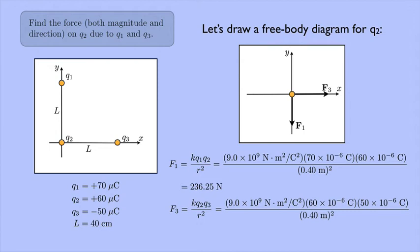And then R squared. Well, R is L. That's 40 centimeters. That'll be 0.4 meters squared. And then I get 168.75 newtons for F3.